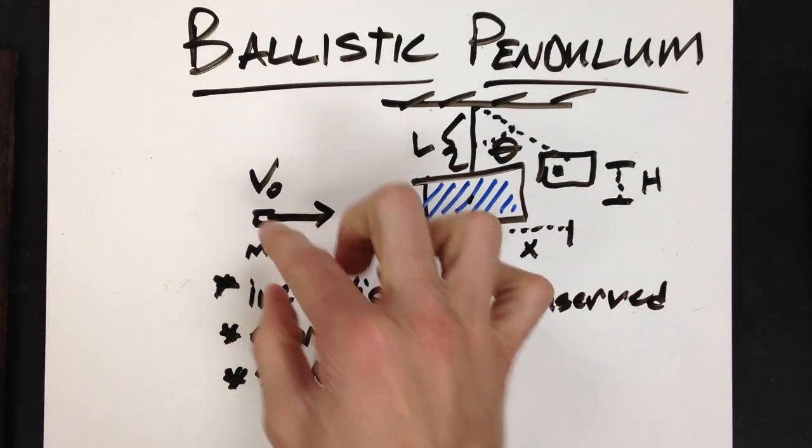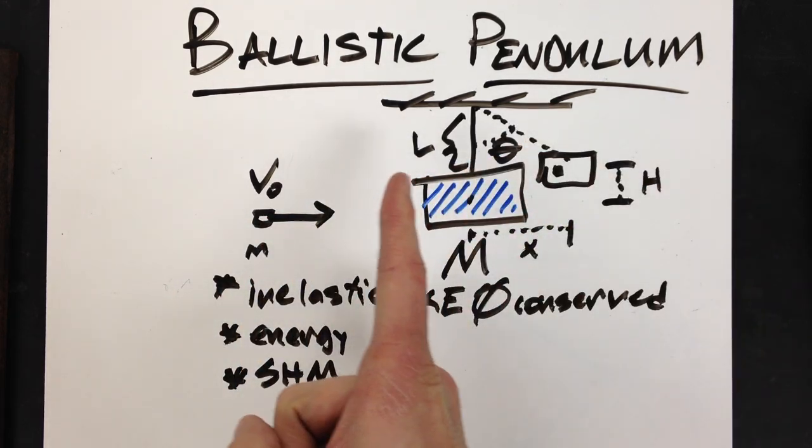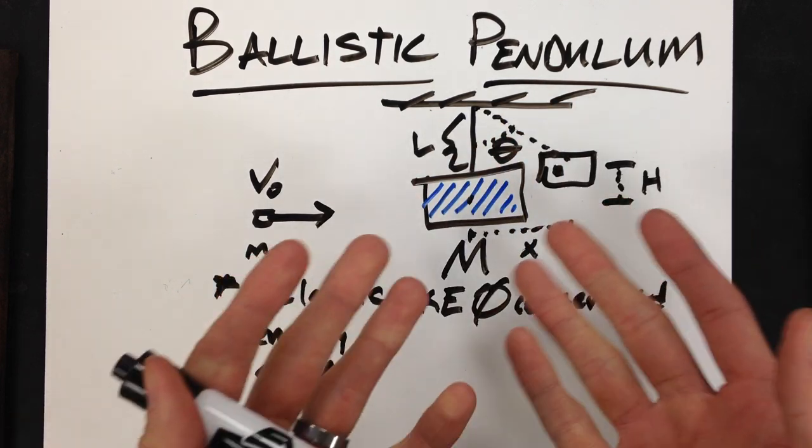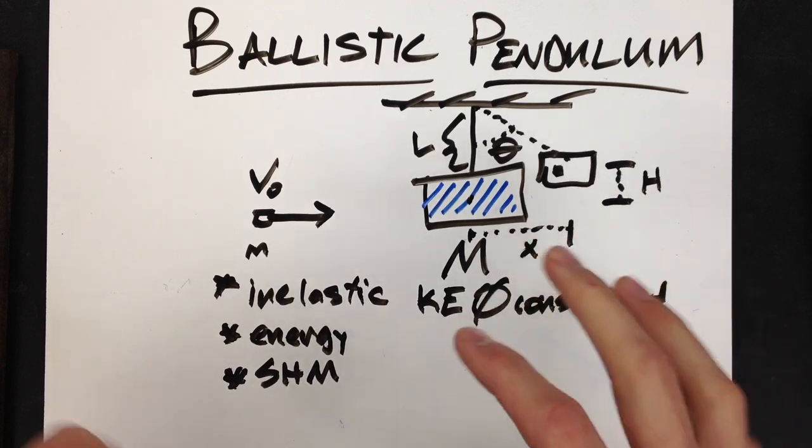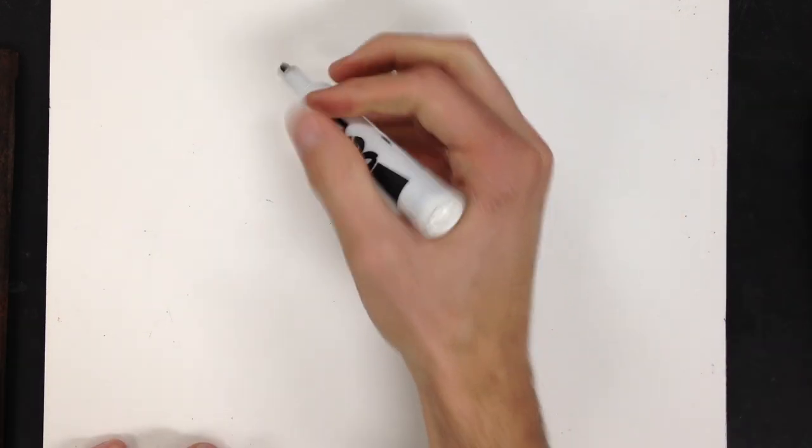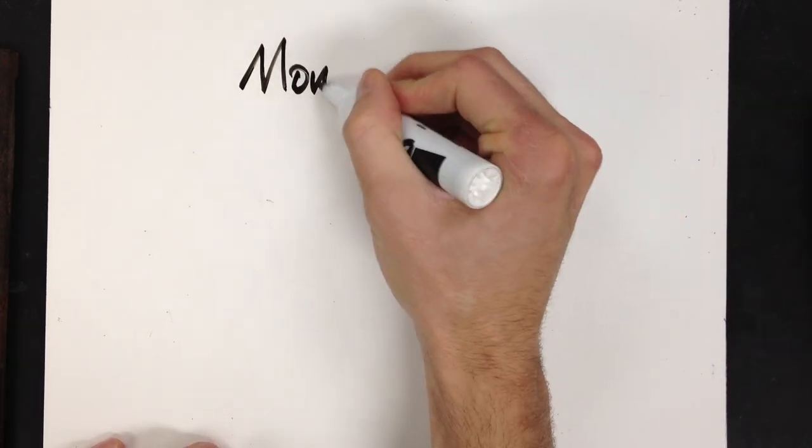Now, there was work done on the bullet by the block to stop the bullet inside the block itself. Now, how much work is done, we could calculate, but we first have to utilize the fact that it was an inelastic collision, which means we are going to use the conservation of momentum.